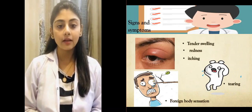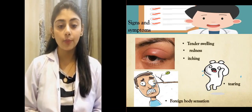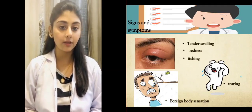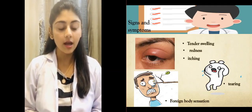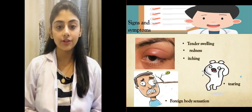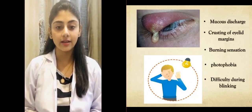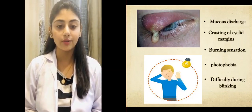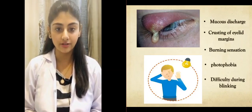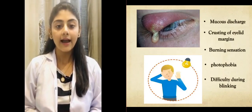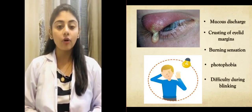Coming towards the signs and symptoms: a stye is a red nodule with tenderness, pain, swelling, and tearing. There is a lump that leads to drooping of the eyelid, and if the stye is large enough it may cause astigmatism, discomfort, foreign body sensation, mucus discharge, itching, burning sensation, crusting of the eyelid margins, and matting of eyelashes in the morning due to mucus discharge. There is also difficulty during blinking and photophobia.